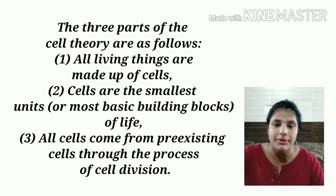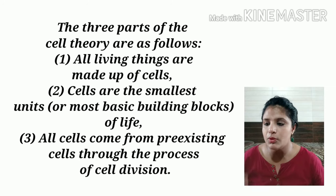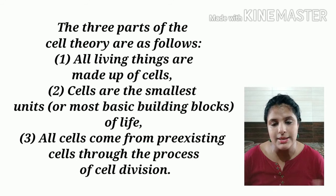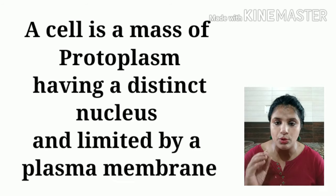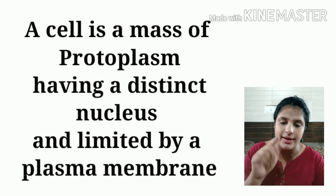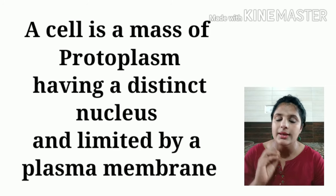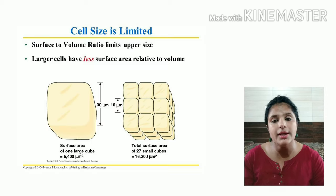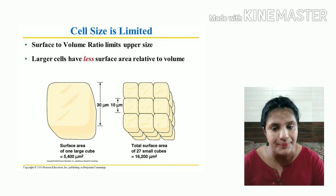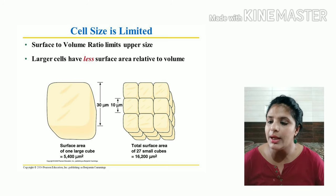Now, talking about the size and structure of a cell — a cell is a mass of protoplasm, a liquid which is enclosed within a distinct layer called the cell membrane. It also consists of a nucleus. A cell has a distinct identity when it has a nucleus.